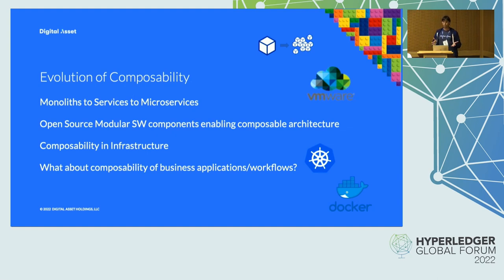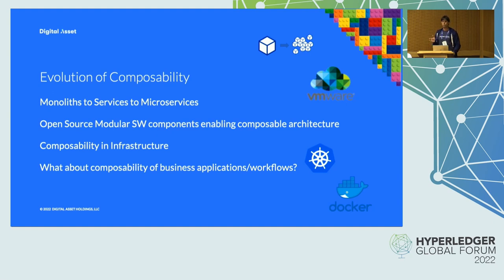Modularity can be applied to infrastructure, which evolved from centralized client-server architecture in the 80s and 90s, to distributed application servers in the 2000s and 2010s, to decentralized serverless and container architecture in the 2010s and 2020s, and which is now heading towards adding a virtual shared system of record based on DLT.